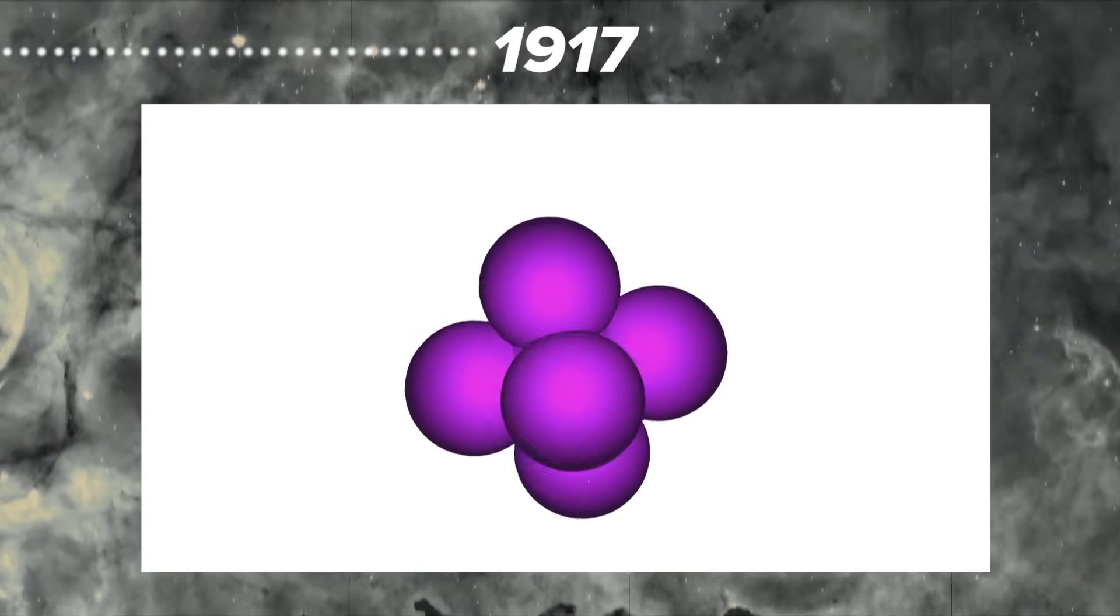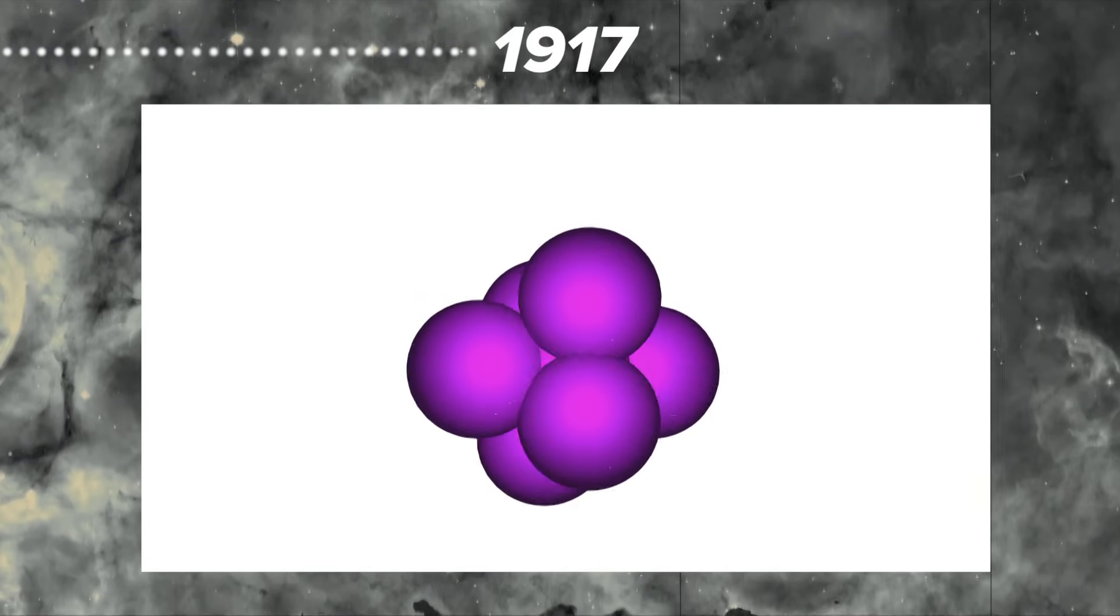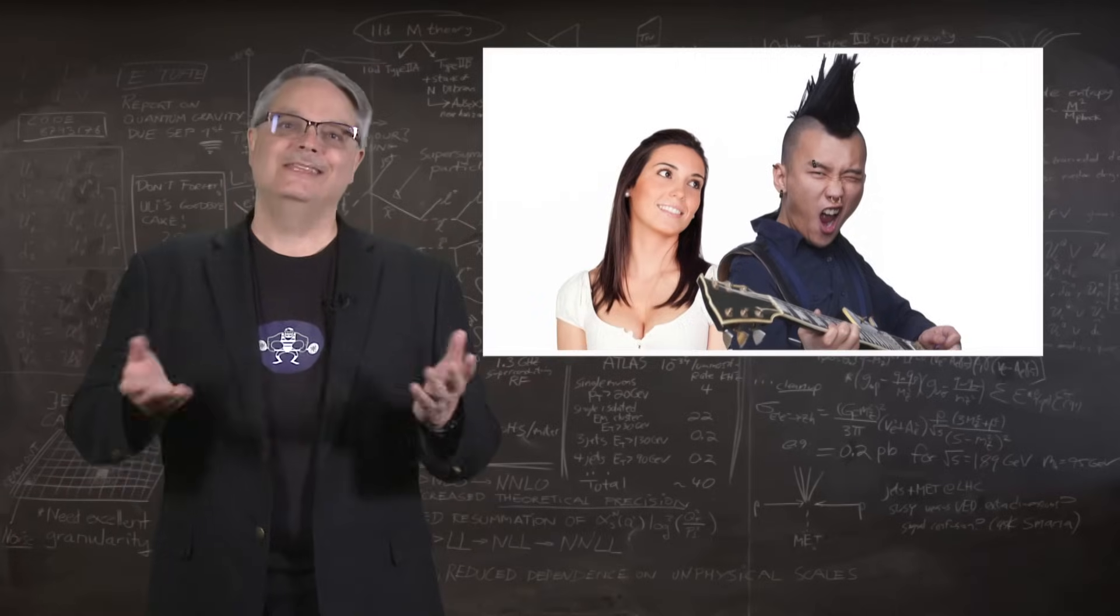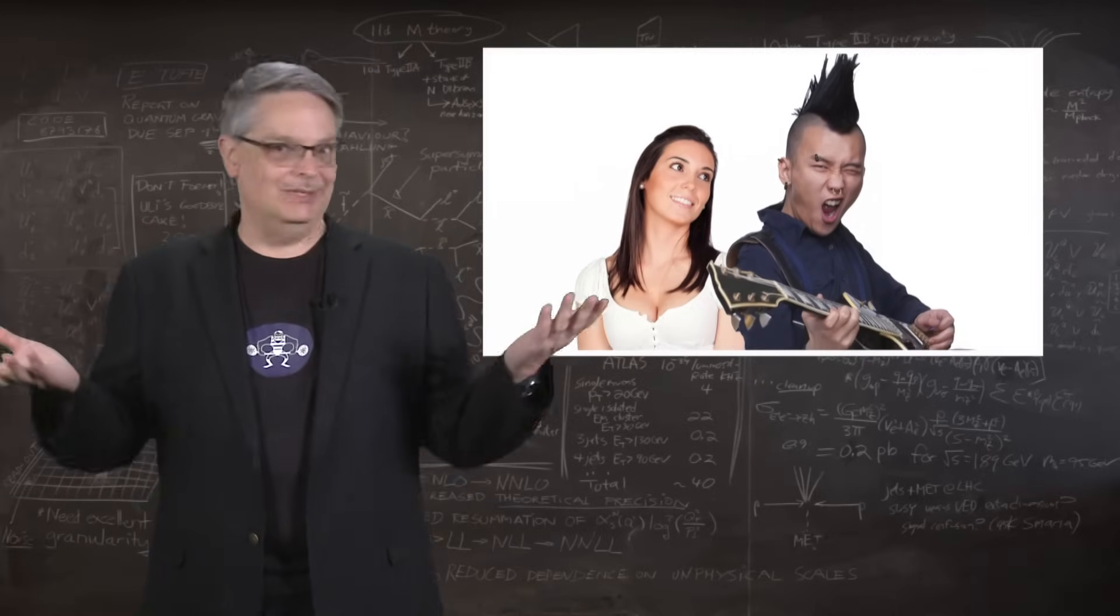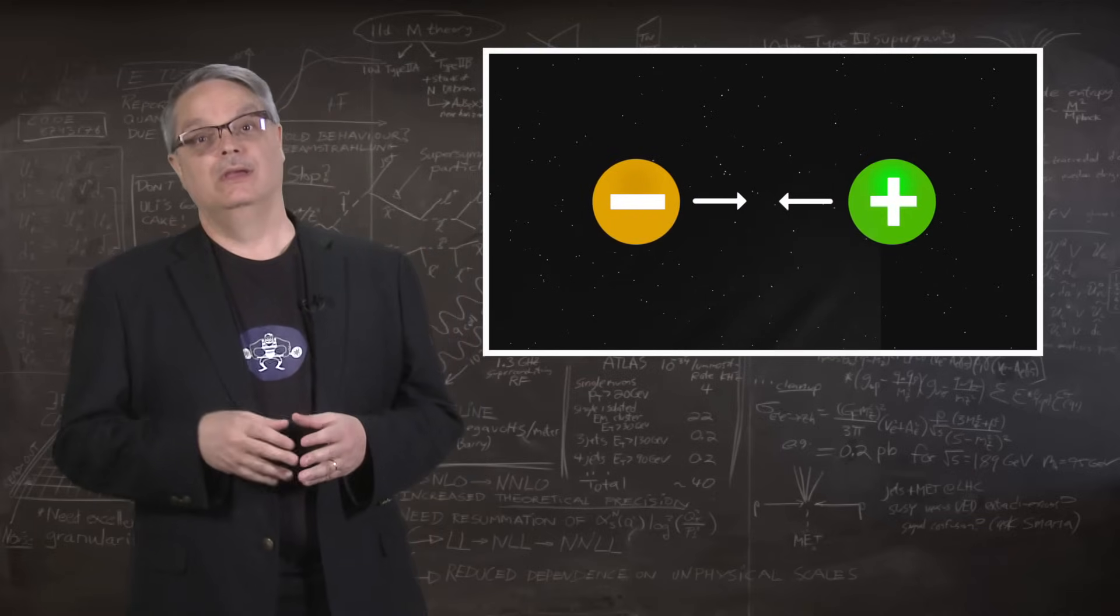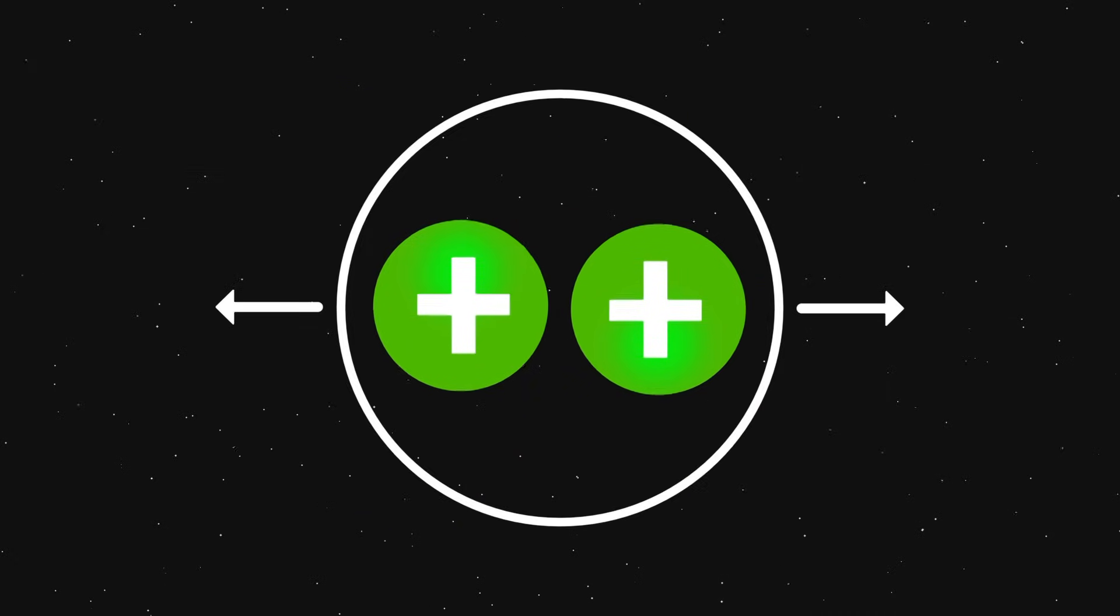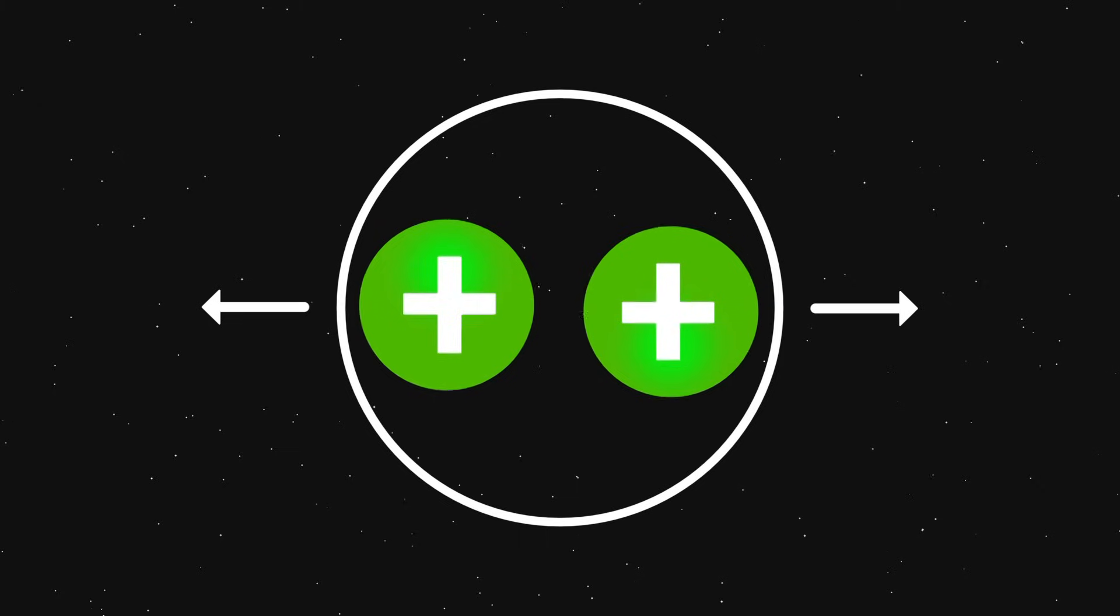Remember that each proton can be imagined as a tiny ball with a positive electrical charge. They say that opposites attract, and that might well work for couples, but it's definitely true for electrically charged particles. On the other hand, like charges repel each other. So let's imagine a simple nucleus consisting of just two protons. Since each proton has a positive electrical charge, they push each other apart.